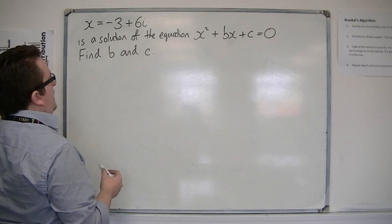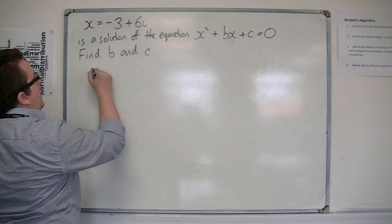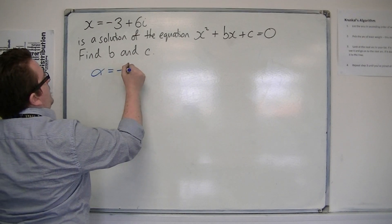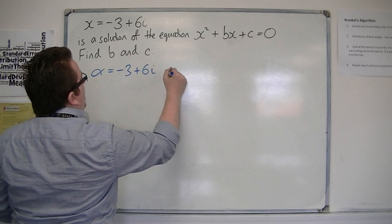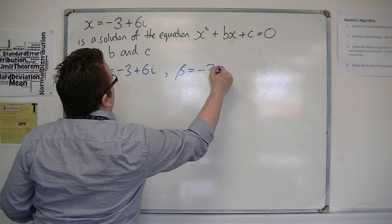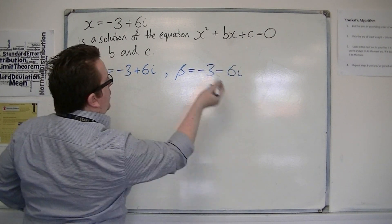In other words, alpha is minus 3 plus 6i, and beta is minus 3 minus 6i, its complex conjugate.